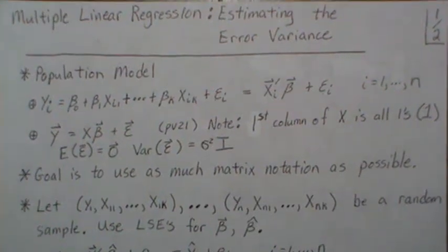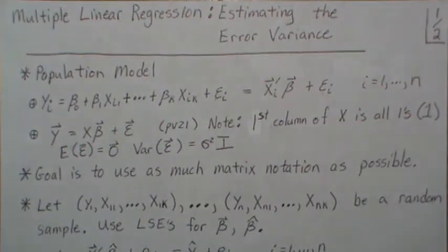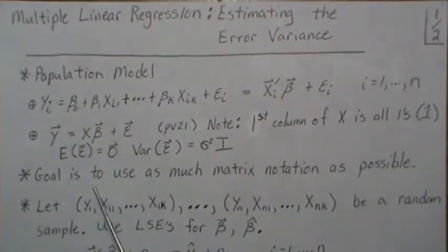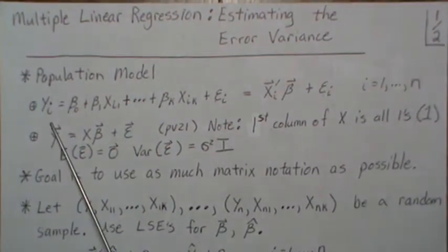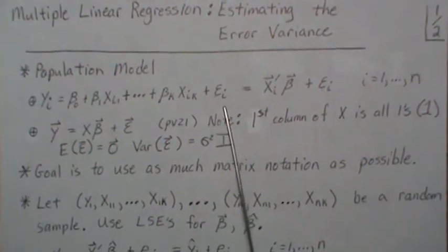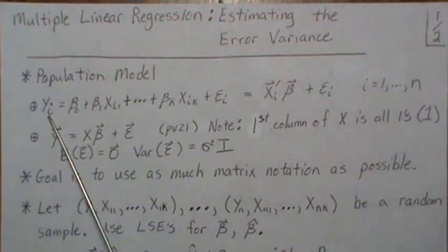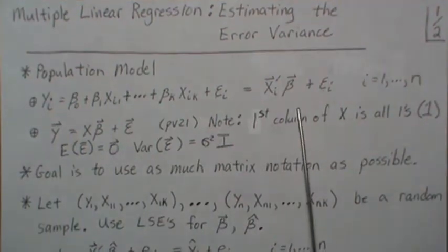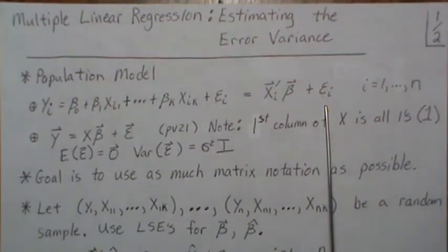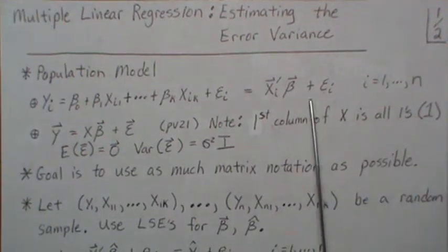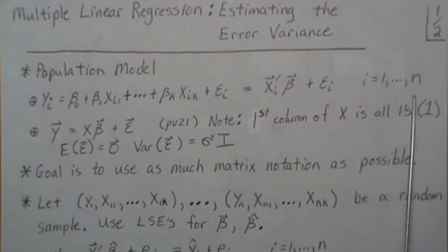In this video we're in the multiple linear regression setting and we want to estimate the error variance. We have a population model that's a linear combination of our predictor variables and these betas, and in vector notation it can be written like this — still scalar, for i from 1 to n.